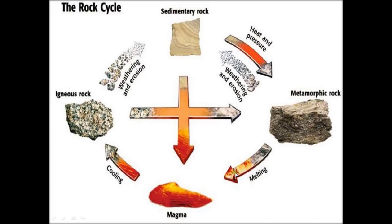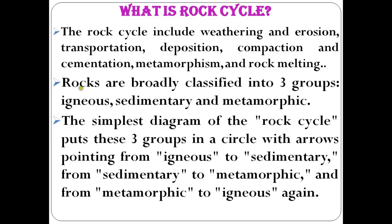From metamorphic rock, after melting, you get magma, and from magma after cooling you get igneous rock. This is the circular way the cycle continues — from igneous to sedimentary and metamorphic, and from metamorphic to igneous and sedimentary. This is how the rocks are being formed; the rock cycle is continuous.